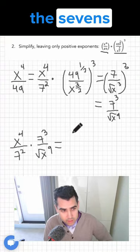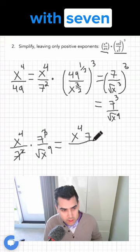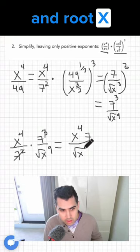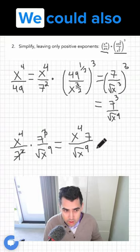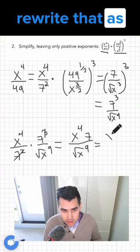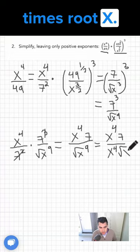We could cancel out the 7s, so we're left with 7 and root x to the 9. Now what is root x to the 9? We could also rewrite that as x to the 4 times root x. Why?